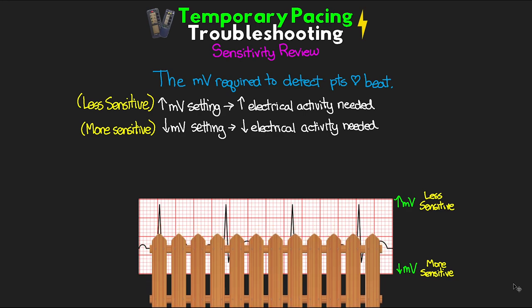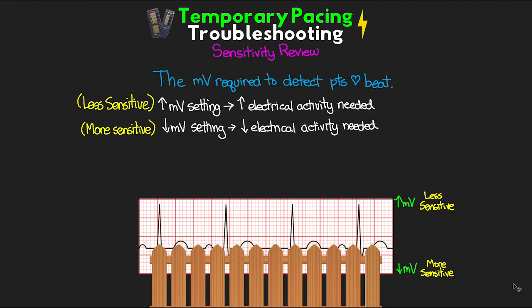If we go too far and make it too sensitive, we'll begin to see T-waves and pick those up as additional beats of the patient's intrinsic rhythm. So remember: the higher the fence and the higher our millivolt setting, the less sensitive we are to the underlying rhythm; the lower the fence and the lower the millivolt setting, the more sensitive we are. It's really important to understand this setting in order to do the troubleshooting we need to do.